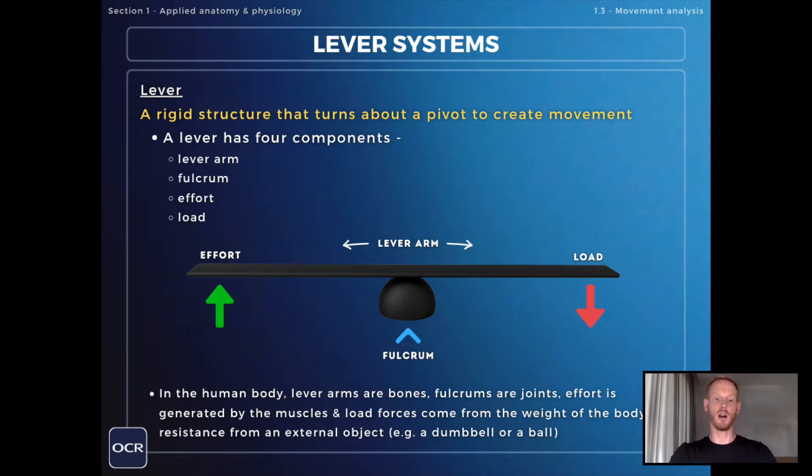In the human body lever arms are bones, fulcrums tend to be joints, effort force is generated by the muscles and load forces come from the weight of the body or resistance from an external object.